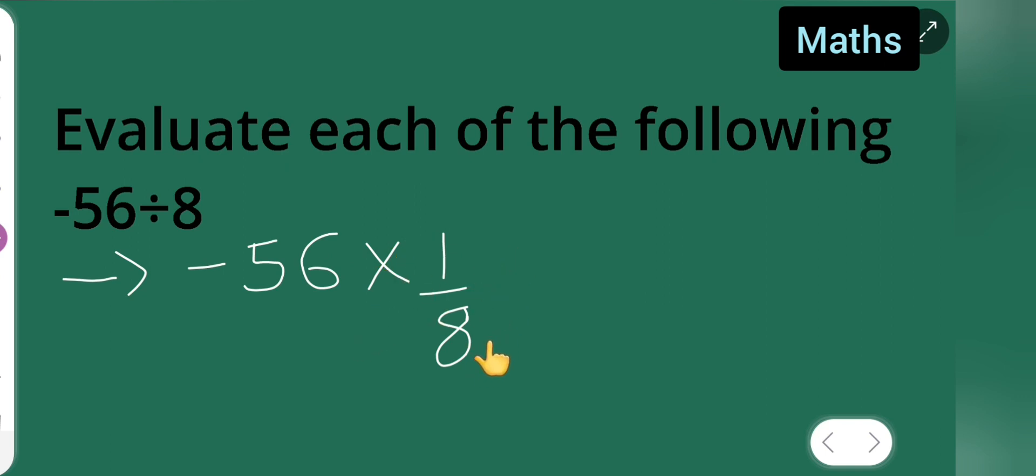Next, this will be equal to -56 × 1/8, which is -56/8. So, 8 sevens are 56, therefore the answer is -7.